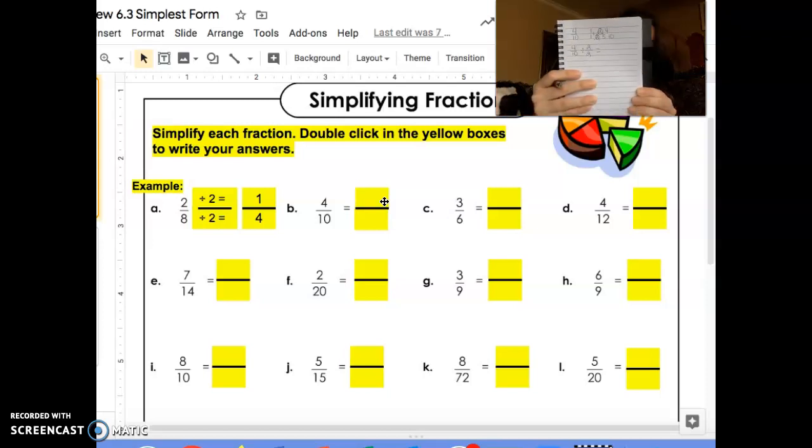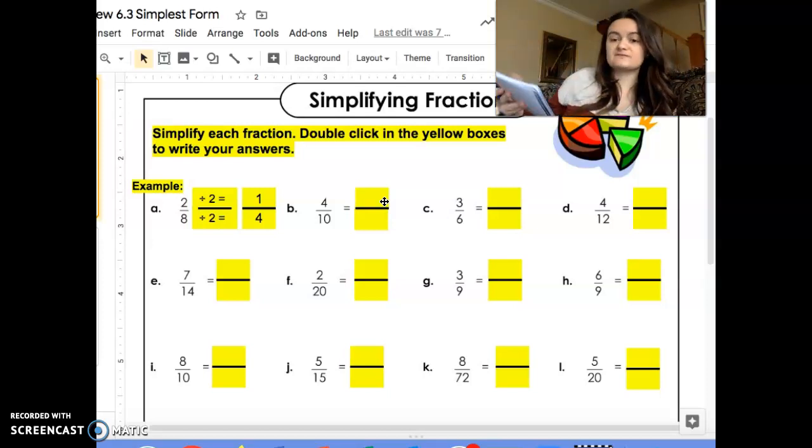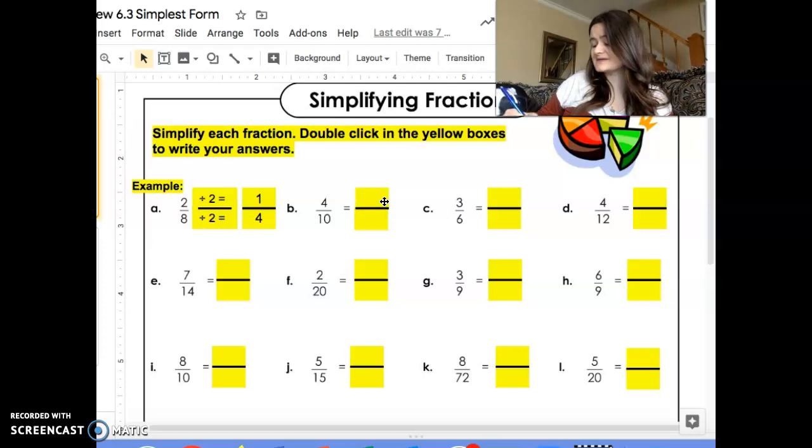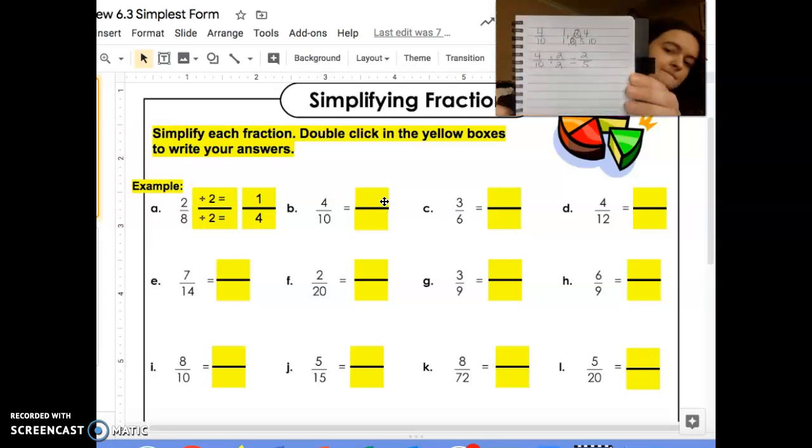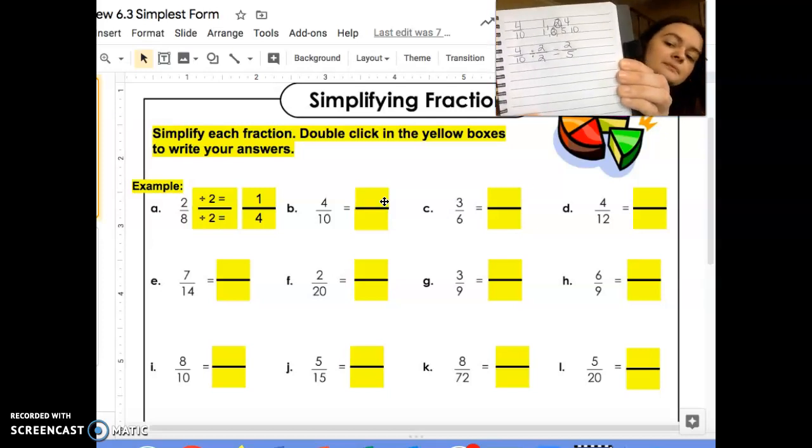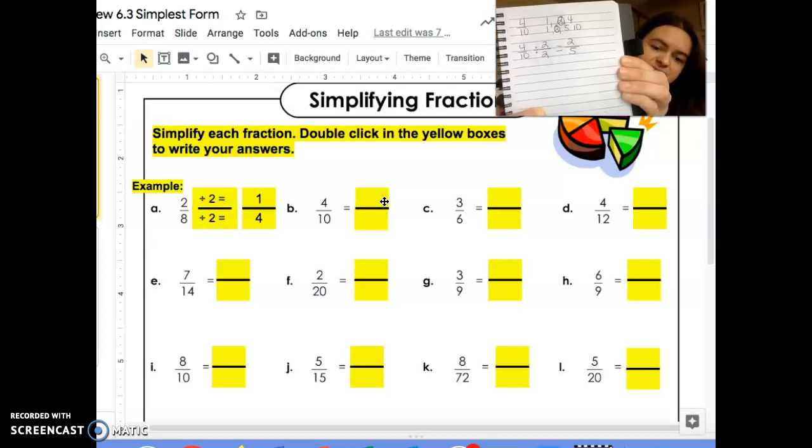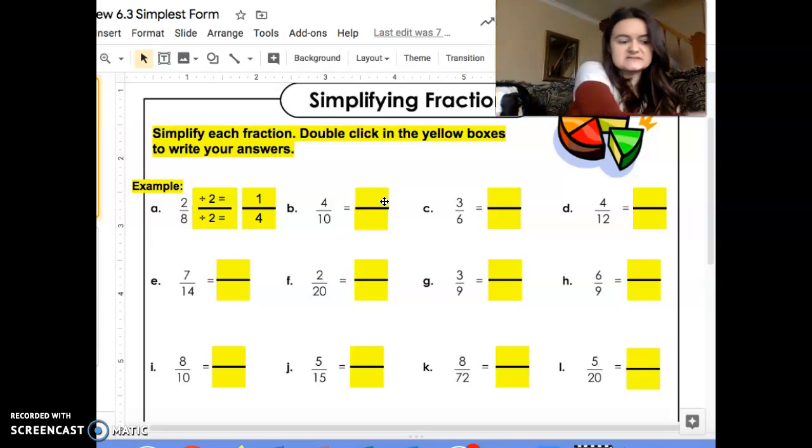Next, I'm gonna divide. Four divided by two—I need to think, two times what number gets me four? And I know that is two. Ten divided by two—hmm, I know that two times five gives me ten, so the answer must be five. I'm done. My answer is two fifths.